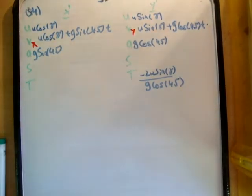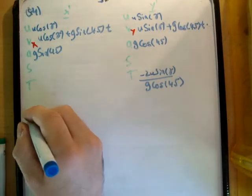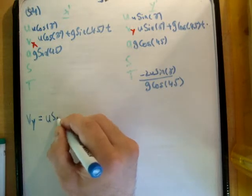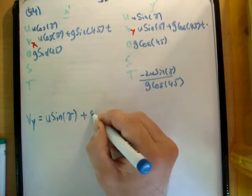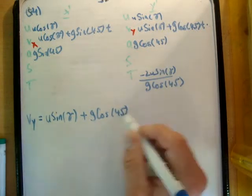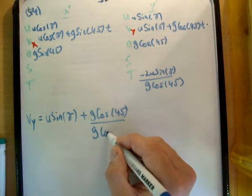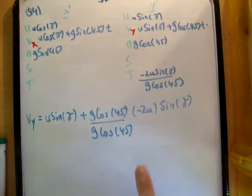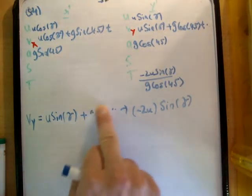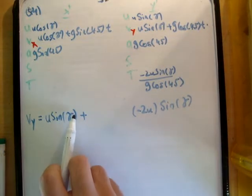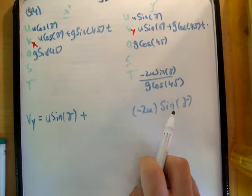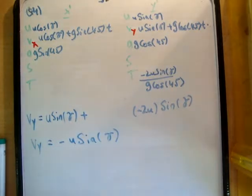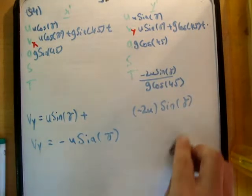For v sub y, we do it similarly. We get u times sine of gamma plus g times cosine of 45 over g times cosine of 45 times negative 2u times sine of gamma. The g cosine 45 terms cancel, and we're left with u sine gamma minus 2u sine gamma, which gives v sub y equals negative u sine gamma. That was pretty straightforward.